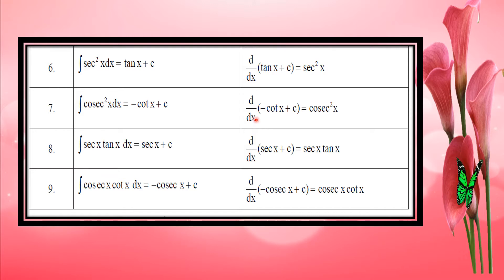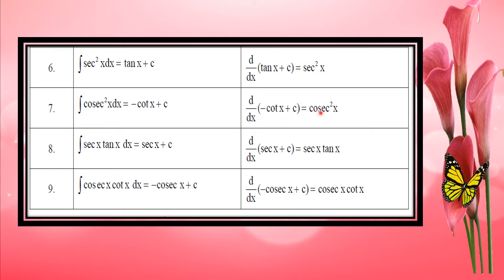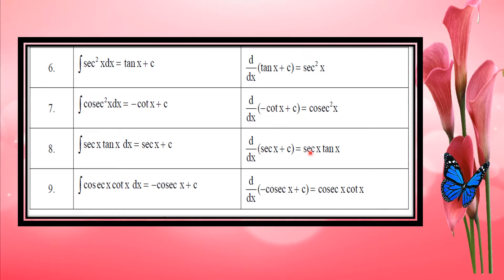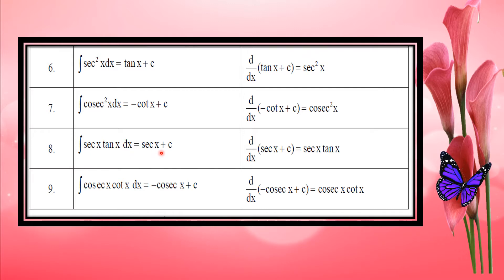d by dx of minus cot x is equal to cosec squared x, so integral of cosec squared x is equal to minus cot x. d by dx of sec x is sec x tan x, so integral of sec x tan x is equal to sec x.